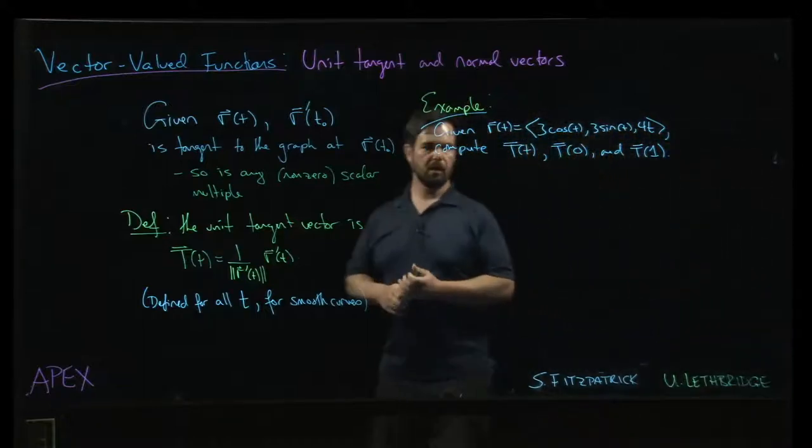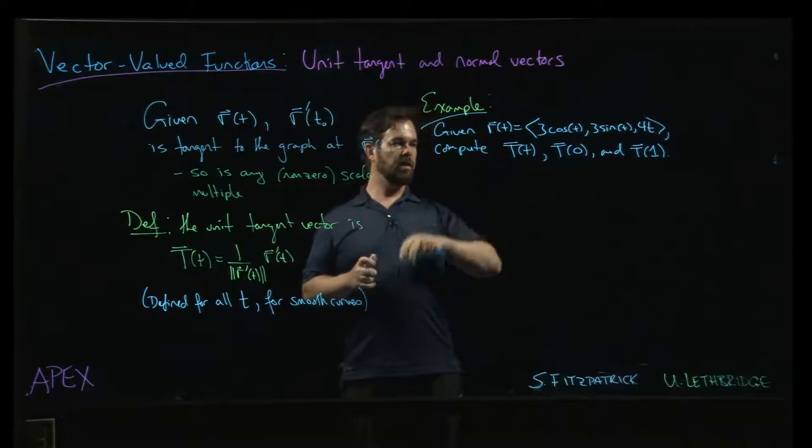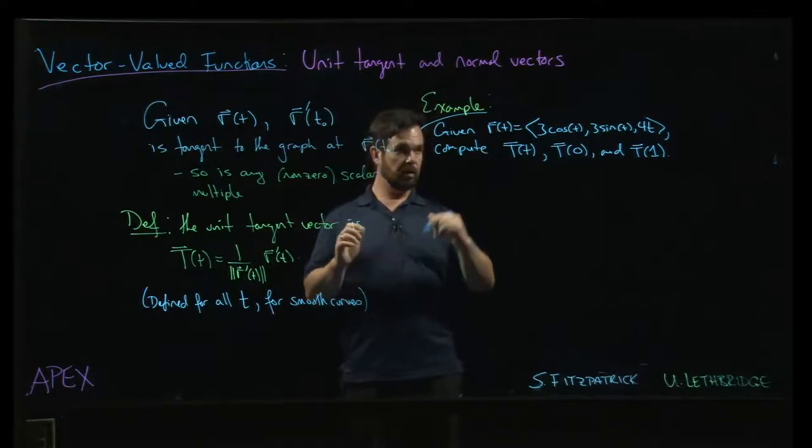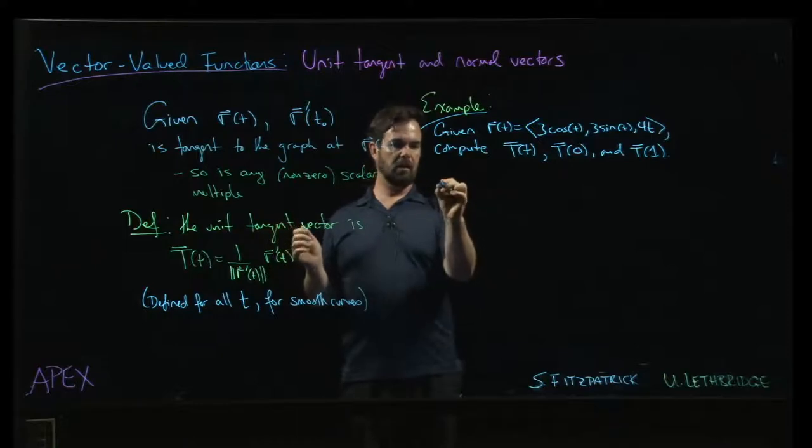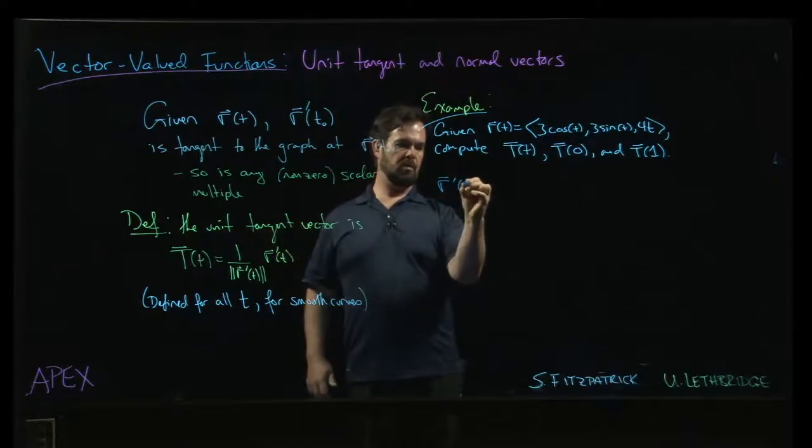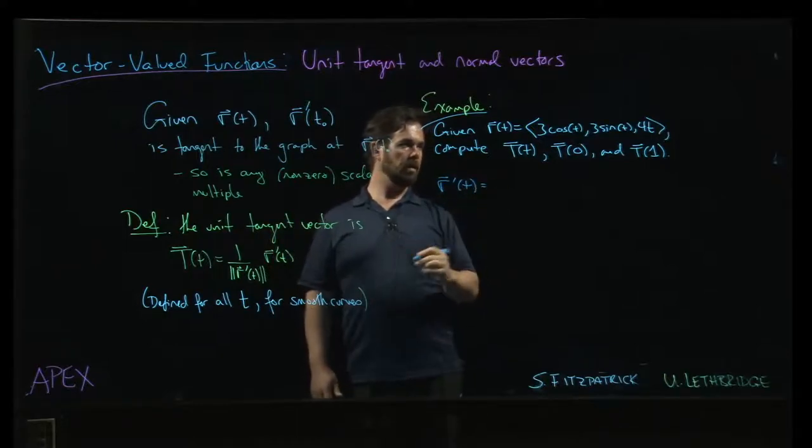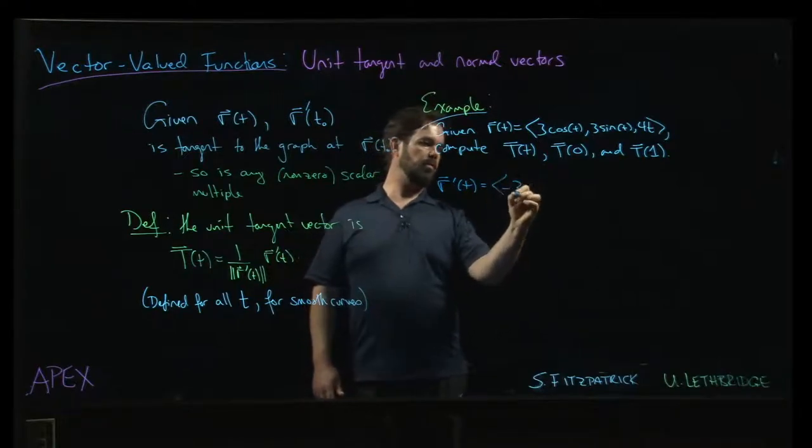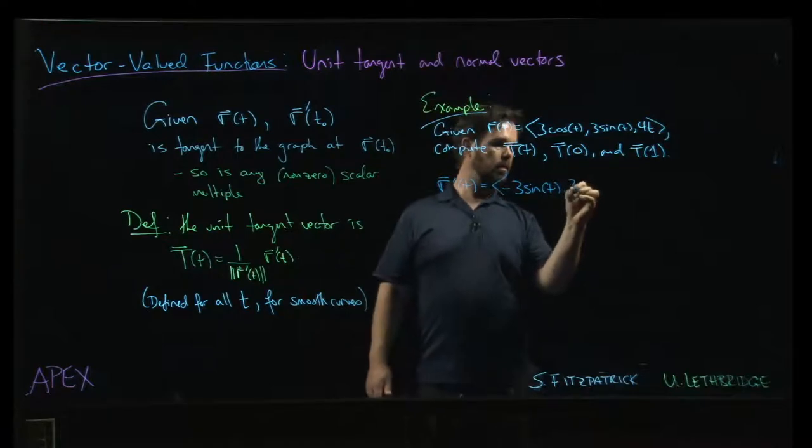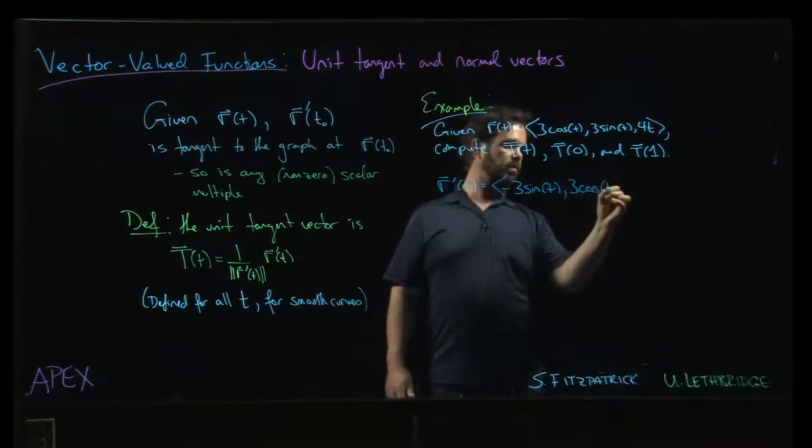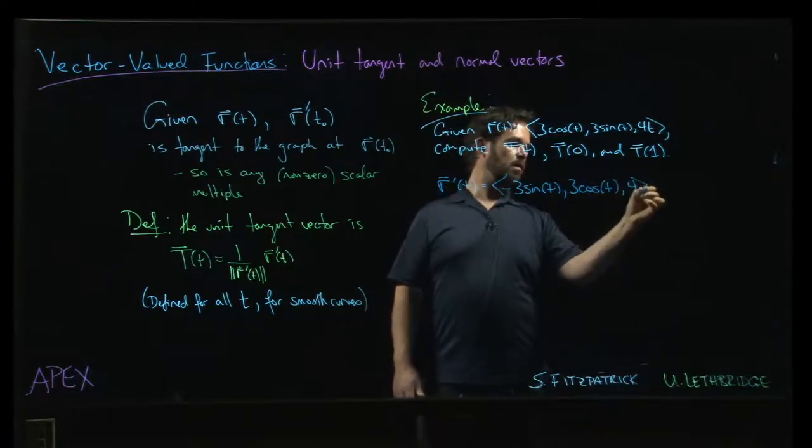So we'll start with a quick calculation here. We want to find the unit tangent vector to the curve given by this particular vector valued function. The first thing is you have to find r prime. So r prime is going to be minus 3 sin t, 3 cos t and 4.